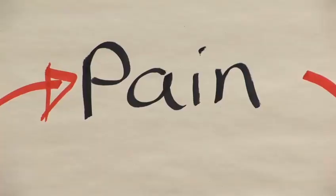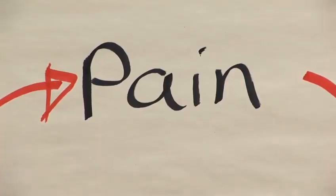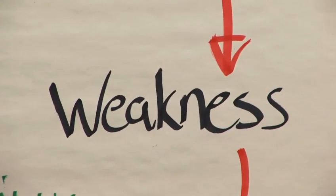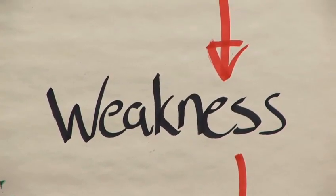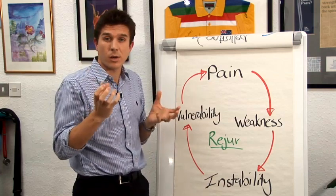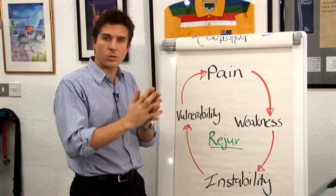Firstly, whenever you have pain, pain will lead to weakness. Some muscles will just shut down. That's just the way it works. It's usually the stabilizers of the spine, the little muscles that keep your spine straight.